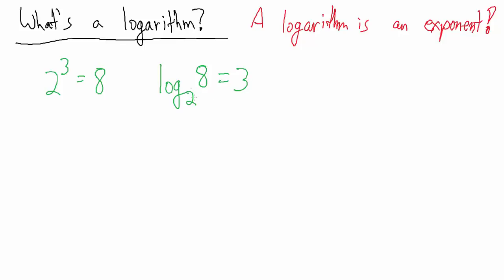So the way we read this is the base 2 logarithm of 8 equals 3. So 3 is a logarithm here. 3 is a special kind of logarithm. It's the base 2 logarithm of the number 8. A shorter way of reading this is log base 2 of 8 equals 3.